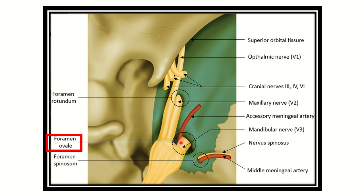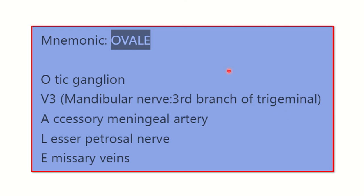Through the foramen ovale, two important structures highlighted in this picture are: the mandibular nerve, which is V3 — the third branch of the trigeminal nerve — and the accessory meningeal artery. We can also use a mnemonic to remember all the contents.